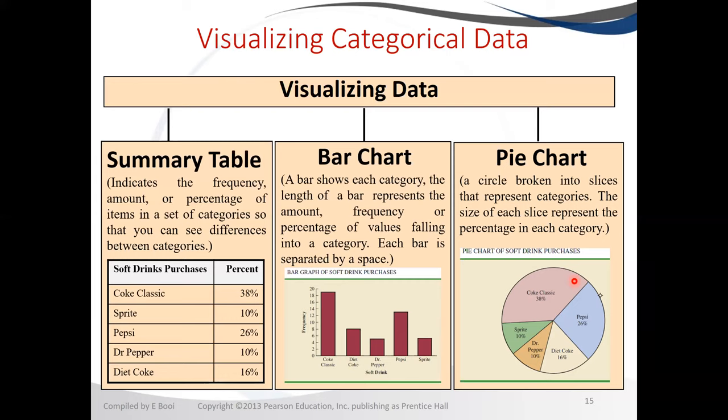In your module, you are expected to know these properties. You need to know what makes up a summary table, what makes up a bar chart, and what makes a pie chart. And we also need to know what are the three types of visualization in order for you to be able to answer the questions in the exam.